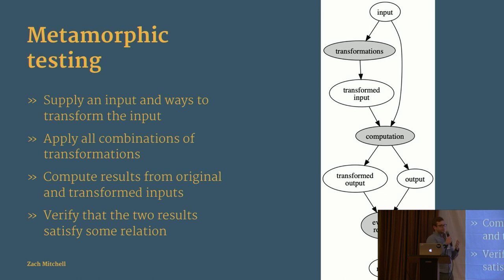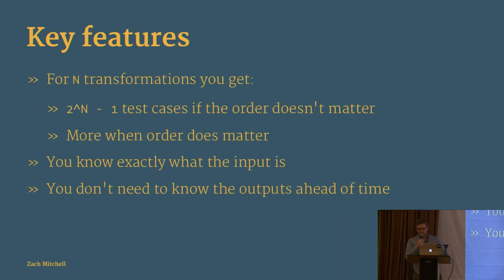Key features: you get 2^N - 1 test cases for N transformations. That's nice. More if the order of the transformations doesn't matter. You know exactly what the input is, so you can say specific stuff about it, and you don't need to know the outputs ahead of time. That eases the burden on the developer.